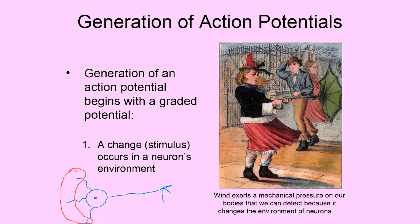A stimulus causing a graded potential could be a change in temperature, pressure, light — for example, if light has entered the eye, that changes the environment of neurons in the eye. It could also be a change in the chemical environment of a neuron. Any kind of change in the environment of a neuron in the area of the dendrites, which are the receptors for the nerve cell, is going to initiate a graded potential.